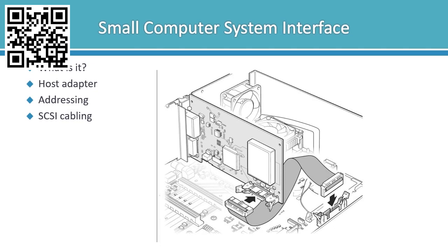In addressing, each external device is assigned an internal address, and the SCSI controller knows the address of each of these devices. When it gets the information for that device, it references the device's ID so there's no confusion as to where the data goes.